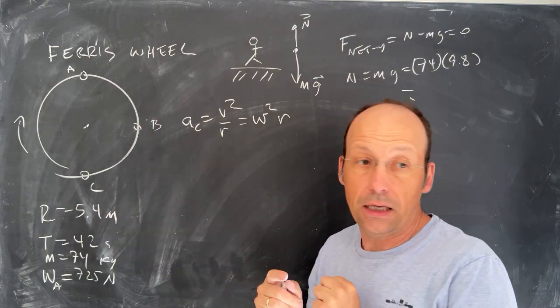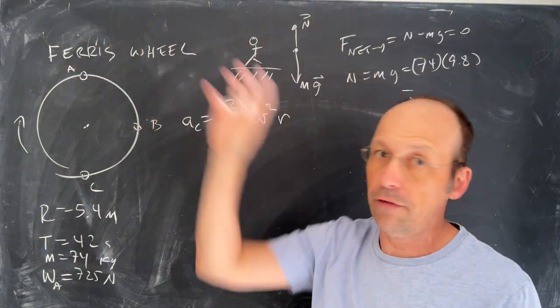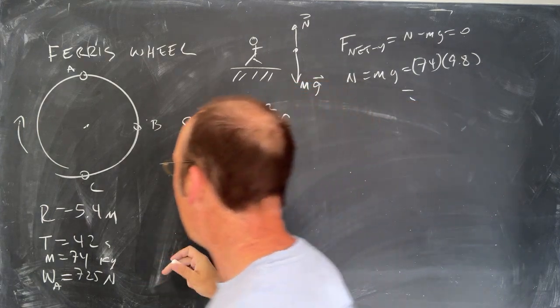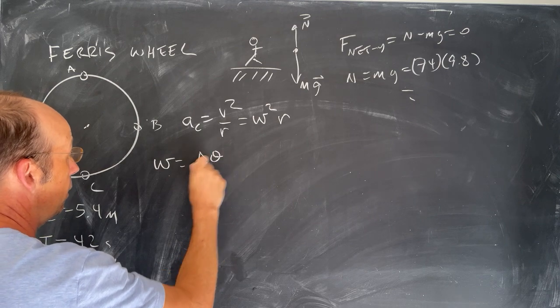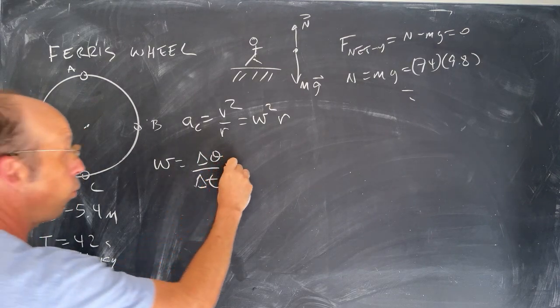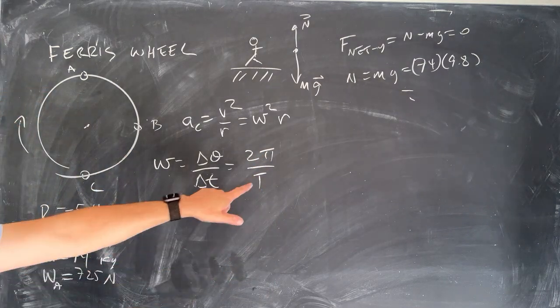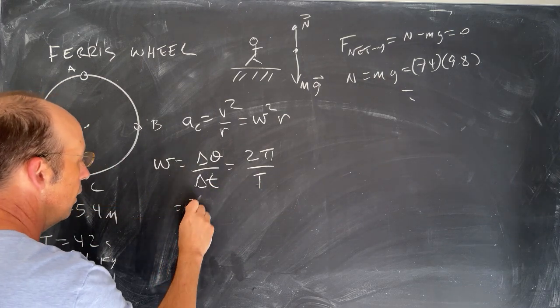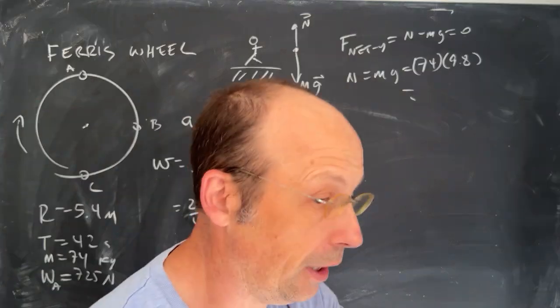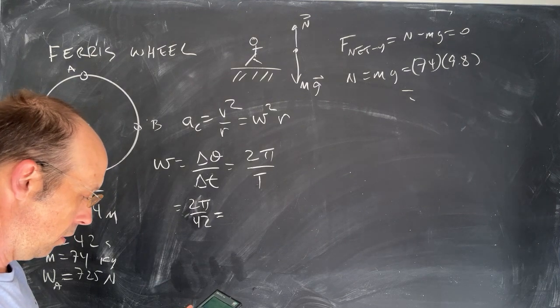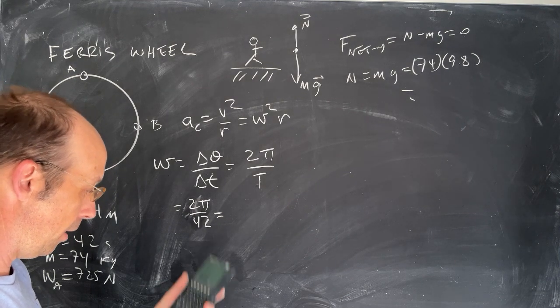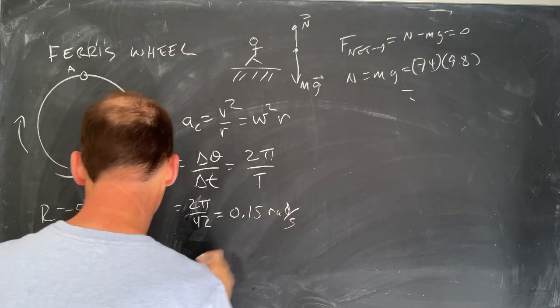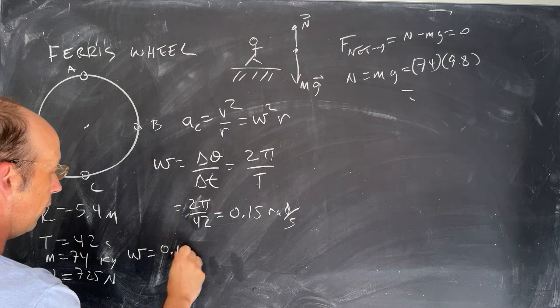But I don't have omega. I have T, the period. And I did that because that's more realistic. If you're looking at a Ferris wheel, you can time how long it takes to go around. And 42 seconds is probably pretty fast. So let's find omega. Omega is delta theta over delta T. The change in time for one revolution is T, the period. So once around is 2 pi radians. The time is 42 seconds. So it's 2 pi over 42, and that gives me 0.15 radians per second.